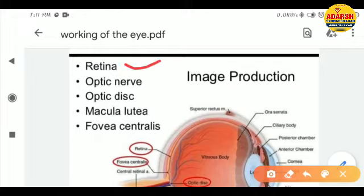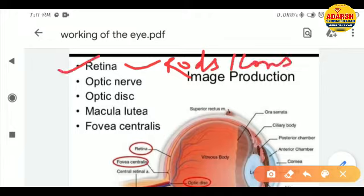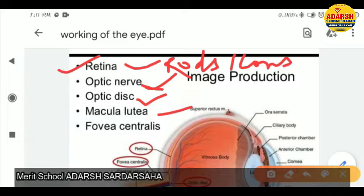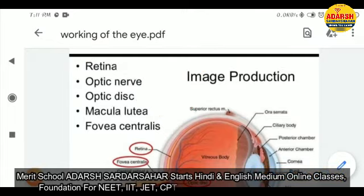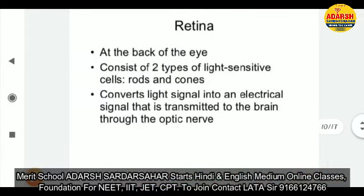The retina is very important as it contains rods and cones. The optic nerve transmits signals to the brain. The optic disc is where the optic nerve travels to the brain. Macula lutea is a new concept — we will study it and fovea centralis in the next slides. The retina is situated at the back of the eye and consists of two types of light-sensitive cells: rods and cones.